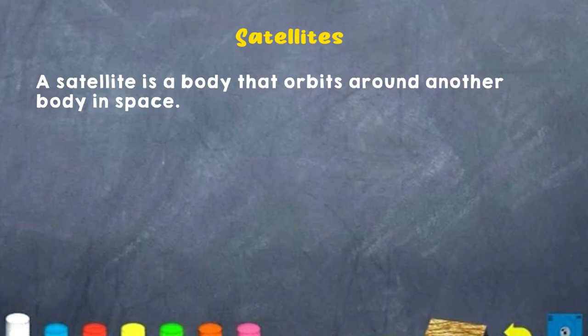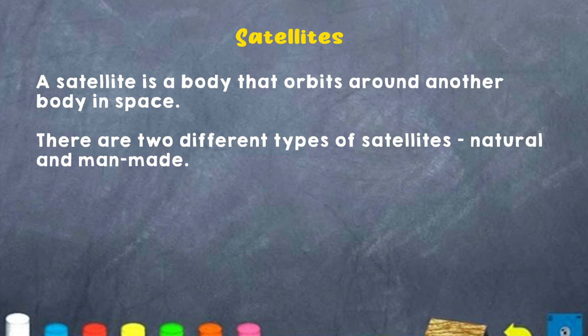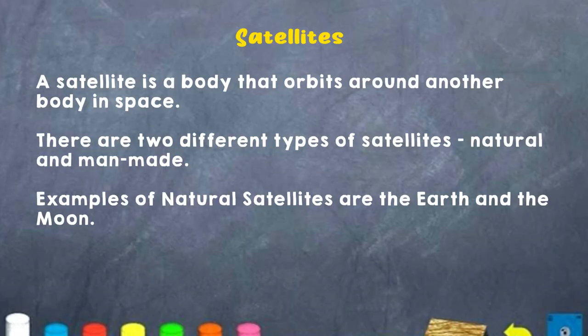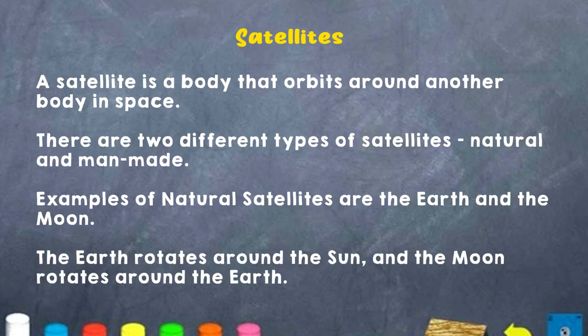Another member of the solar system is the satellite. A satellite is a body that orbits around another body in space. There are two different types of satellites: one, natural, and two, artificial — natural meaning it exists on its own, and artificial meaning it is man-made. Some examples of natural satellites are the Earth and the Moon. The Earth rotates around the Sun, and the Moon rotates around the Earth.